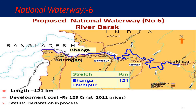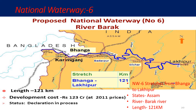National Waterway Six stretches from Banga to Lakhipur in Assam. The state is only Assam. The river is the Barak river. The length is 121 kilometers.